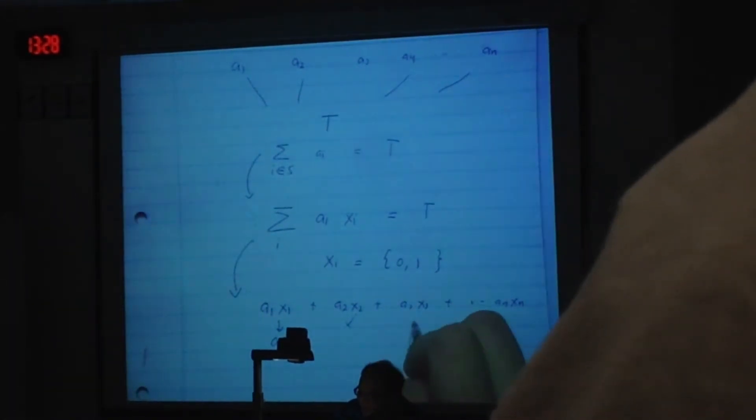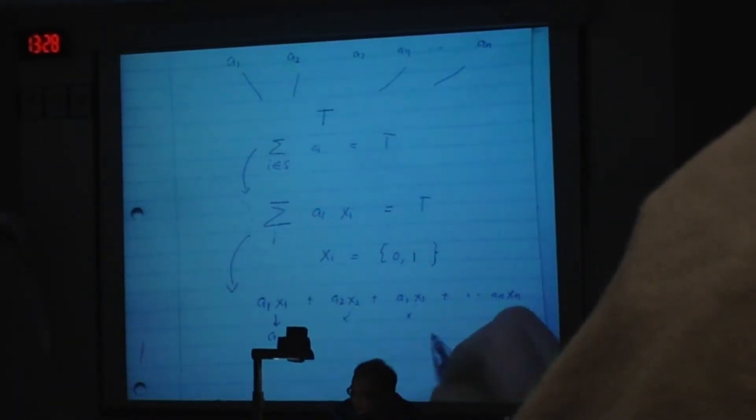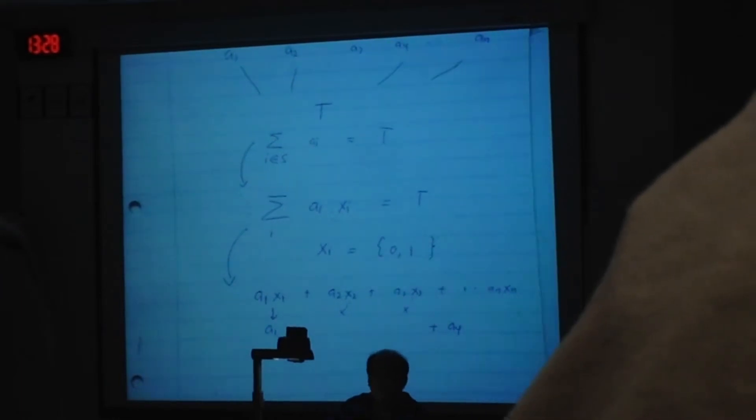If X2 is 0, that means you don't get this one, it's 0. If this one is 0, that means you don't get this one. If this one is 1, then that means you add A4. Do you understand what that means?